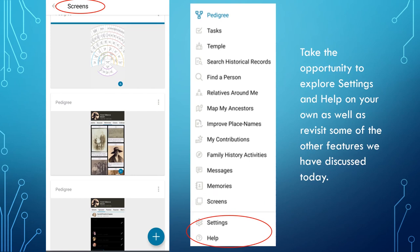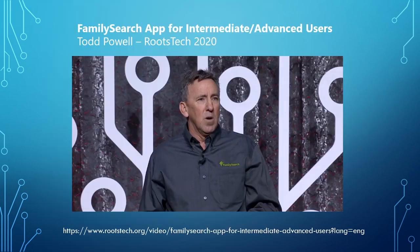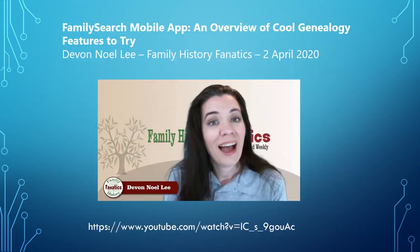Hopefully you will take the opportunity to explore those last two menu items on your own, as well as revisit some of the other features we have discussed today. If you would like more information on the FamilyTree mobile app, here are two presentations that may be helpful, including FamilySearch Mobile App: An Overview of Cool Genealogy Features to Try by Devon Noel Lee. I hope you will enjoy using the FamilyTree mobile app. Have a great day.